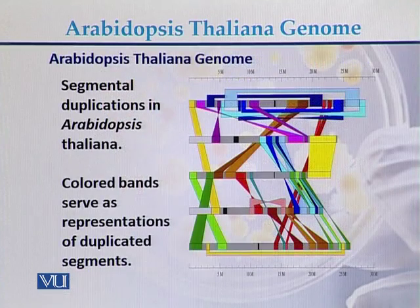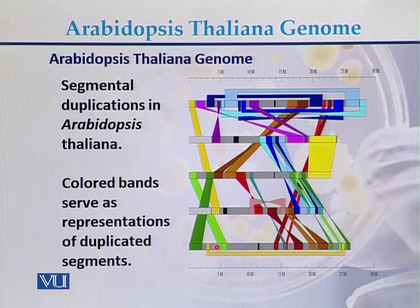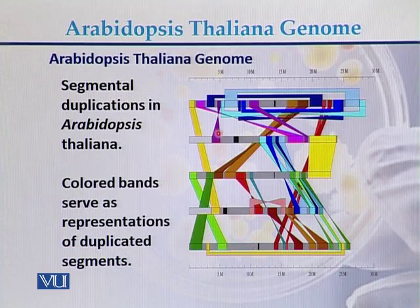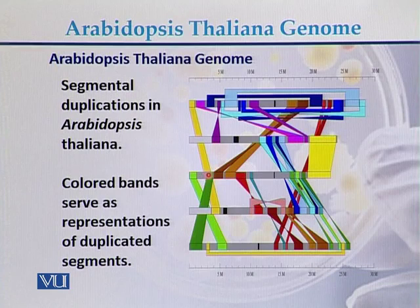In this diagram we can see five different chromosomes of the Arabidopsis thaliana genome. These bars correspond to chromosomes 1, 2, 3, 4, and 5. On all five chromosomes we can see segmental duplications — a segment of DNA that is also present on another chromosome.